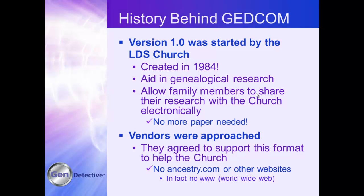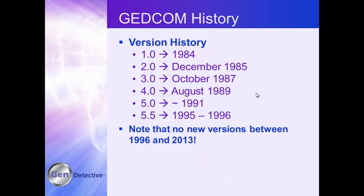Our history: version 1 in 1984, version 2 in December of '85, version 3 in October of '87, version 4 in August of '89, then we stretch out to '91, and then 5.5 in 1996. That's it, folks — that's where we are today. We did not have DNA testing; the internet and World Wide Web was just starting; Ancestry, FamilySearch, MyHeritage didn't exist yet.